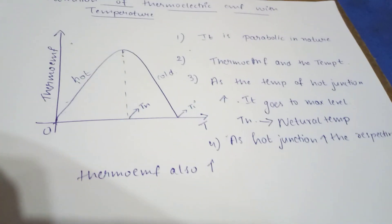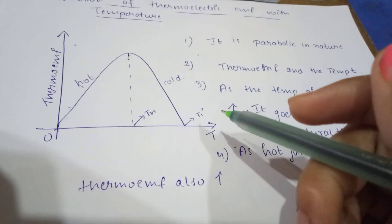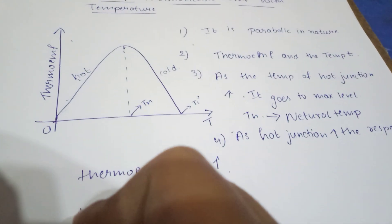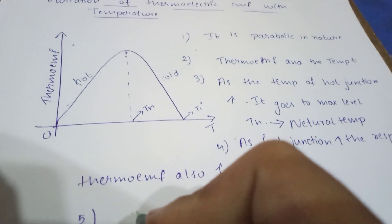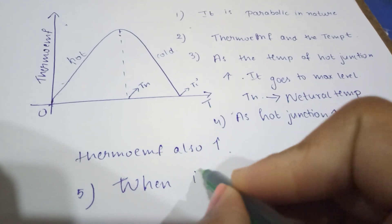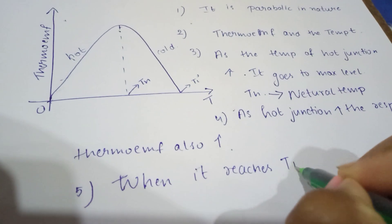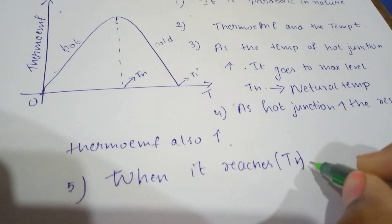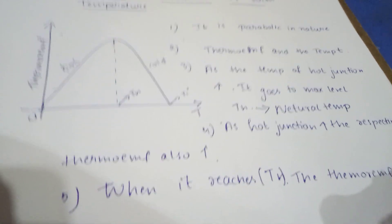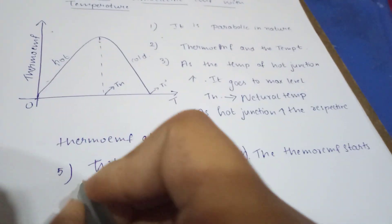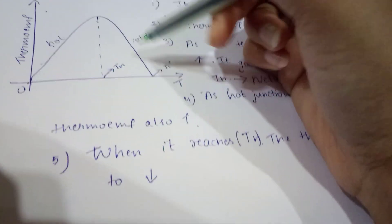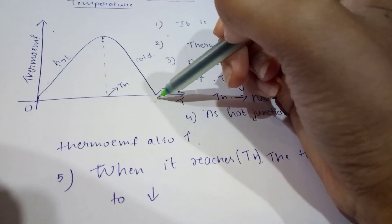When it reaches the maximum point T-N, the thermo EMF gradually starts decreasing. As the fifth point, you have to write: once the neutral temperature T-N is reached, the thermo EMF starts to decrease.